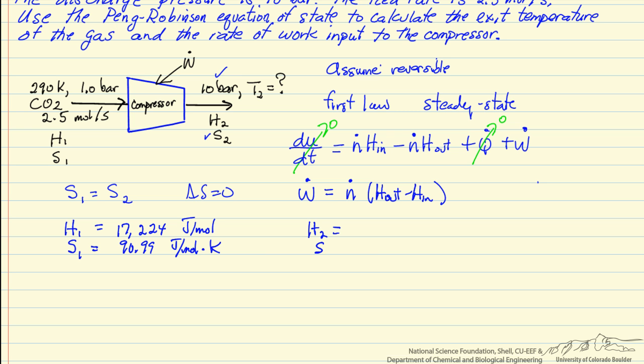We want to know H2, we know S2 is 90.99, we do not know T2, we know P2 is 10 bar. So in the spreadsheet we can put in 10 bar, and then we're going to adjust T2 to get the correct value for the entropy. Once we do that, we can then determine the enthalpy. It turns out 469.5K is the temperature that gives us this entropy at this pressure, so the temperature increases significantly due to compression. We're putting energy into the gas that raises the temperature of the gas, and then we can read off the spreadsheet the value for H2.